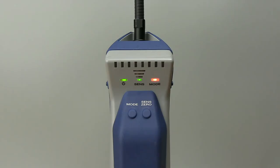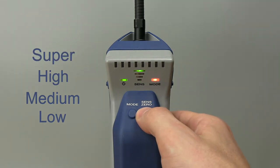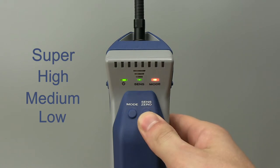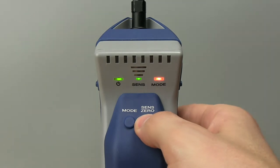Pinpoint mode has four sensitivity settings: Low, Medium, High and Super. While Super is the most sensitive, it may not always be the best for your application. For large leaks, a lower sensitivity setting may work best. Toggle between sensitivities by pressing the Sense Zero button.